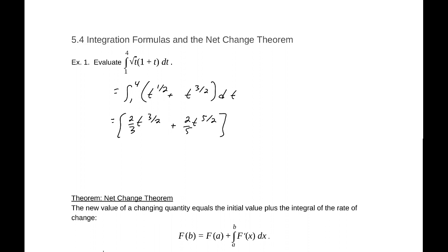We'll evaluate that at the end points of 1 and 4. Evaluating at 4, we get 2 thirds 4 to the 3 over 2, 2 fifths 4 to the 5 over 2, minus evaluating at 1, 2 thirds 1 to the 3 halves plus 2 fifths 1 to the 5 over 2, which will be 256 over 15 if we take the time to evaluate that.